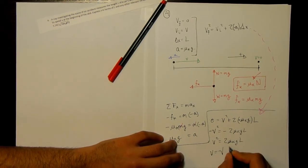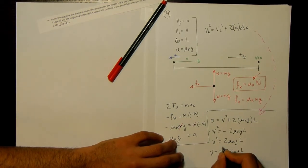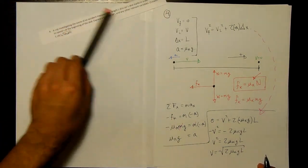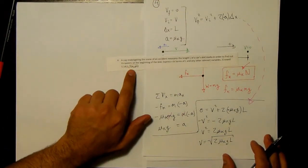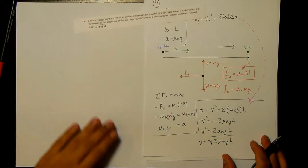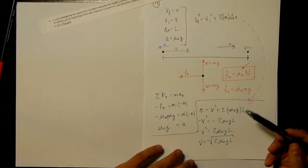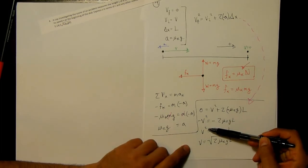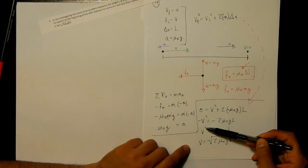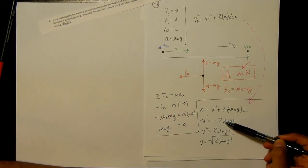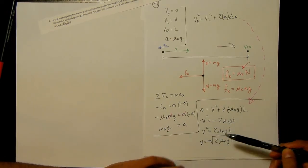And if I take a square root, square root of 2 mu k g l. And that's what we have in our answer. 2 mu k g l. So the reason that that negative was really bothering me was because I knew I was going to take a square root. And you cannot take the square root of a negative number, and that's going to give you an imaginary number. But that wouldn't make any sense for this context, for a velocity.